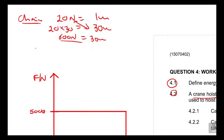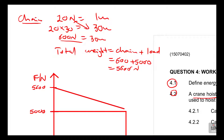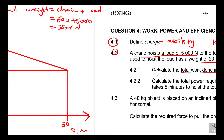Now remember: if you take the 600 newtons, the total weight will be the chain plus the load. So you take the chain, which is 600, and add the 5,000. You get 5,600 newtons. When you sketch the diagram, you connect it to show that the force goes from 5,000 at the bottom to 5,600 at the top.